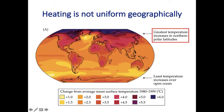The ocean has been absorbing a lot of the temperature changes, so it hasn't been heating up nearly as much as other places. The United States has been warming a medium amount. Parts of the Sahara have been heating up a lot, and Siberia, parts of Asia, and the Himalayas have been warming relatively quickly as well.